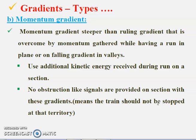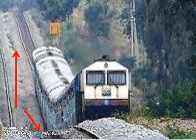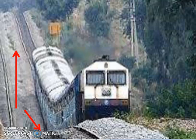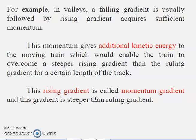Momentum gradients are steeper than the ruling gradient and are overcome by means of the momentum gathered while running on a plain or falling gradient in the valley. As shown in the figure, the gradient is steeper compared to the ruling gradient, but the train moves on its own by gathering momentum. We should not provide any signals or obstacles at the junction of a momentum gradient. This momentum gives additional kinetic energy to the moving train, enabling it to overcome a steeper rising gradient.